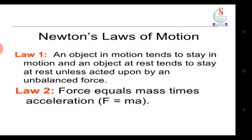Second law: Force equals mass times acceleration, F = ma. Second law میں ہم نے force، mass اور acceleration کا relationship study کیا۔ Acceleration، force کی direction میں proportion ہوتا ہے — جتنی زیادہ force لگائیں گے اتنا زیادہ acceleration ہوگا۔ لیکن acceleration، body کے mass کے inversely proportion ہوتا ہے۔ F = ma کے ذریعے ہم force find کر سکتے ہیں۔